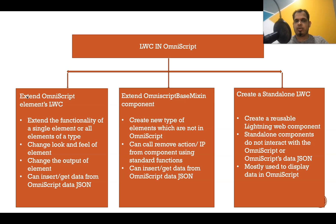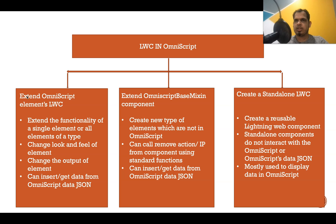The second way is we can extend the OmniScript base mixin. What it does is provide you some methods and properties which can be used to extend the functionality of OmniScript itself, instead of a particular element. For example, let's say you want to create a new type of element which should be interacting with the OmniScript — meaning it should be getting data from the OmniScript data JSON and it should be updating data inside the OmniScript data JSON.